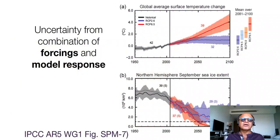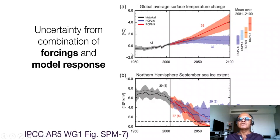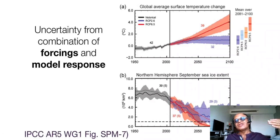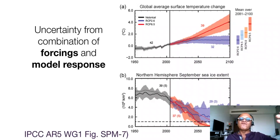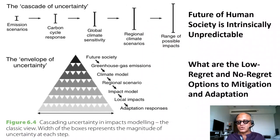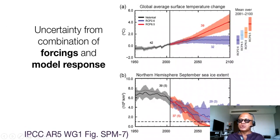Uncertainties arise from a combination of forcing and model response, which the RCPs represent in terms of range. Historic simulations show models reasonably capturing trends, though not year-to-year variability. Looking at temperature across various scenarios and northern hemisphere September sea ice extent — September being the end of northern hemisphere summer — the business-as-usual scenario of RCP 8.5 can make Arctic sea ice disappear fairly fast by 2050 or just thereafter.